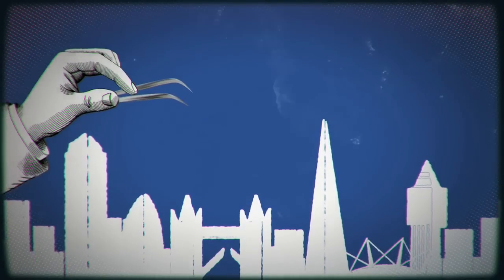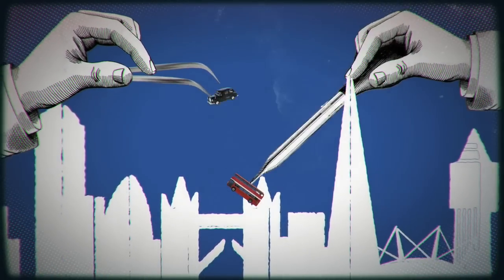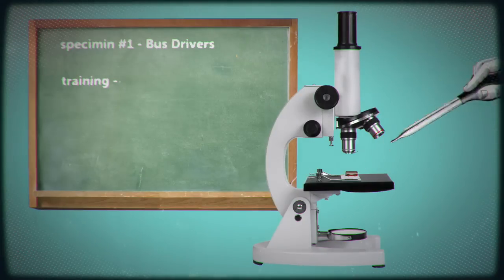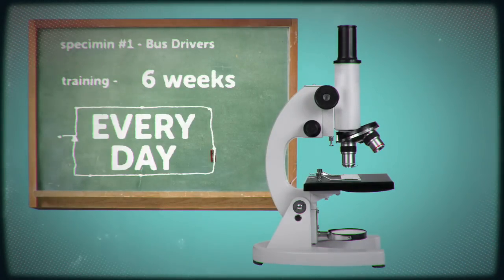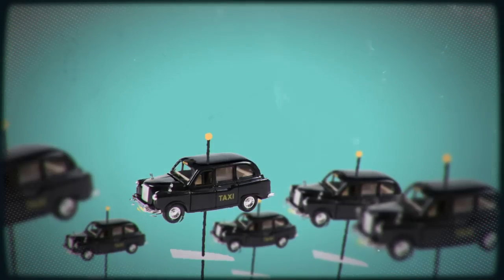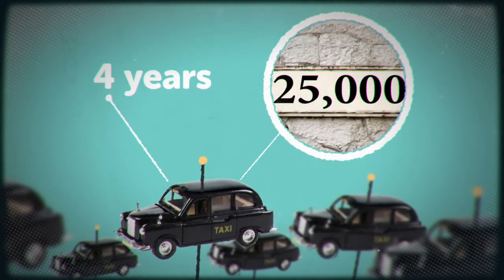In 2000, researchers began to investigate a group of London taxi and bus drivers. The bus drivers trained for six weeks and then drove the same routes every day. Whereas the taxi drivers had trained for up to four years, memorising some 25,000 streets.